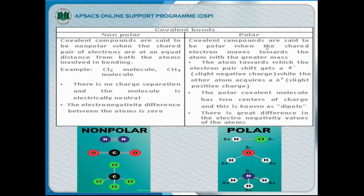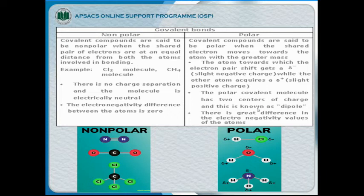Polar covalent compounds are polar when the shared electrons move towards the atom with greater electronegativity. The atom towards which the electron pair shifts gets a slightly negative charge, while the other atom acquires a slightly positive charge. The polar covalent molecule has two centers of charge, known as a dipole. Examples of non-polar molecules are N₂, CO₂, CCl₄, and CH₄, and examples of polar molecules are HCl, H₂O, and NH₃.